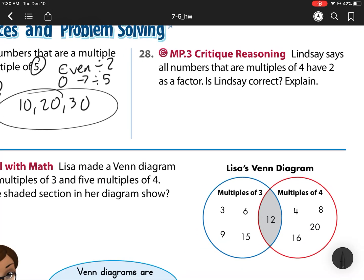For 28, we have Lindsay says that all numbers that are multiples of 4 have 2 as a factor. Is she correct? What she's basically saying is, if I have a number 16, that's a multiple of 4 because I have 4, 8, 12, 16. She's saying it has 2 as a factor. So, she's saying 16 can be broken up as 2 times something equals 16. So, my initial guess is yes. And, if that was your guess, too, then you have it correct.